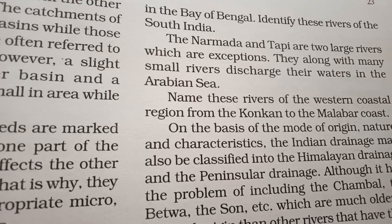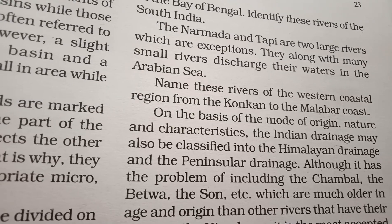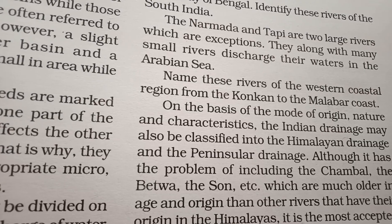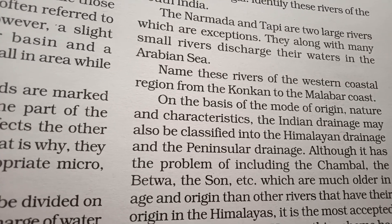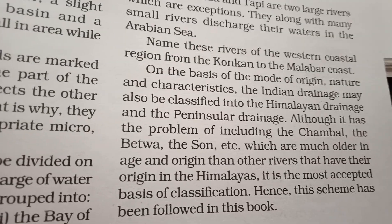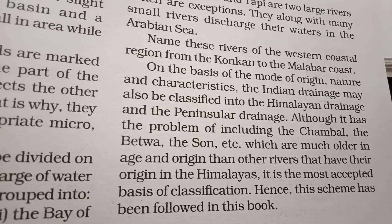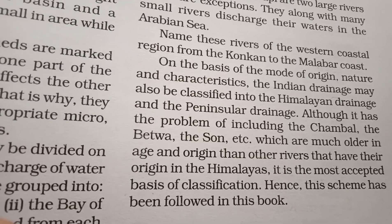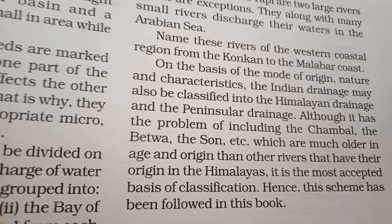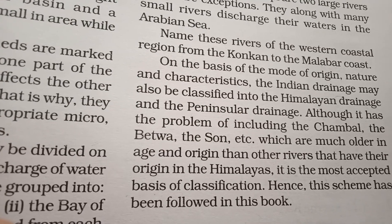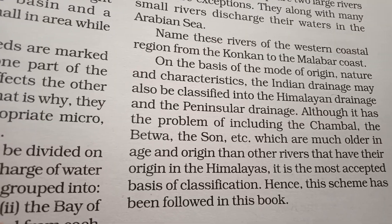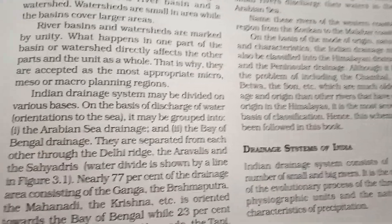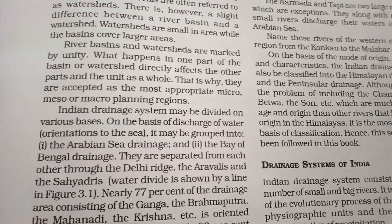On the basis of the mode of origin, nature, and characteristics, Indian drainage may also be classified into Himalayan drainage and Peninsular drainage. Although there is a problem of including rivers like the Chambal, Betwa, and Son, which originate from the Vindhya ranges rather than the Himalayas, this is the most acceptable basis of classification. Now I will show you the next video about the drainage system in India. Thank you.